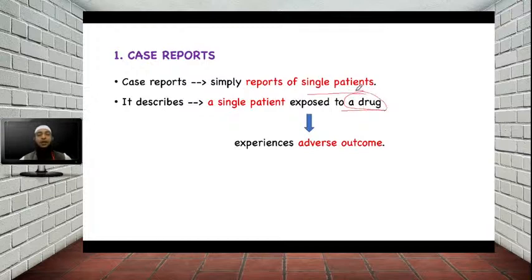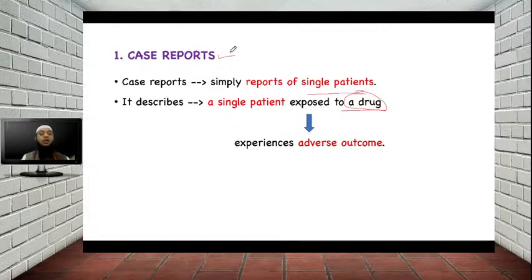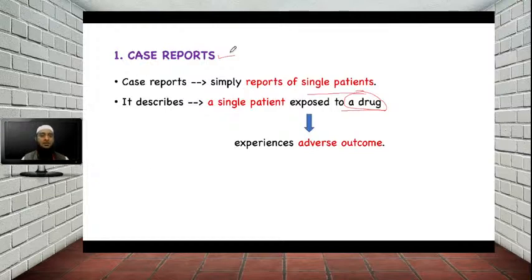Adverse outcomes not observed earlier during the clinical trial can be reported in the form of a report sheet — such a report is called a case report. The characteristic of a case report is it is a single patient exposed to the drug who experienced an adverse outcome. Throughout this chapter we will be studying case studies to understand epidemiological study. The first case study is related to a young woman who was on treatment with the oral contraceptive and she suffered from pulmonary embolism.